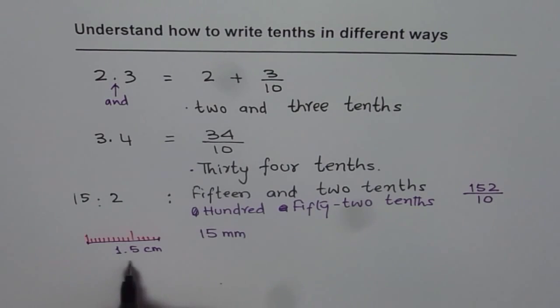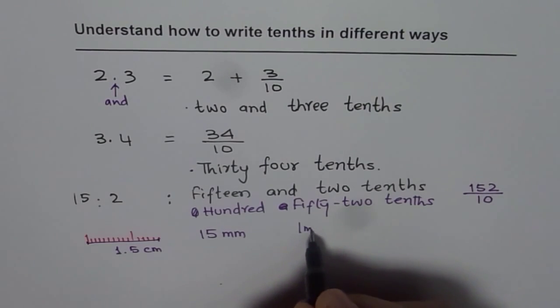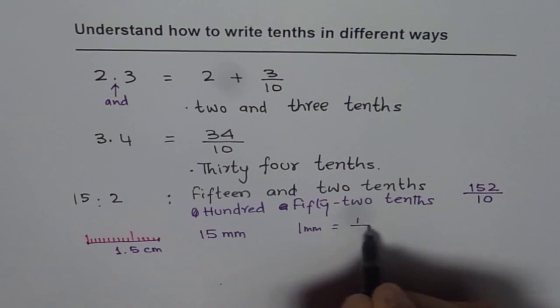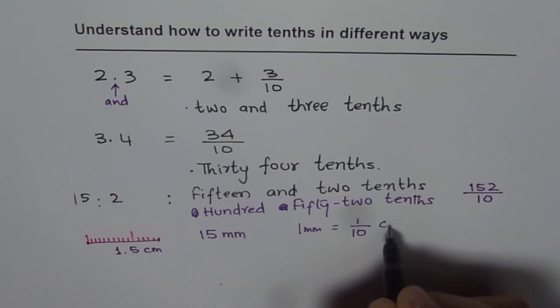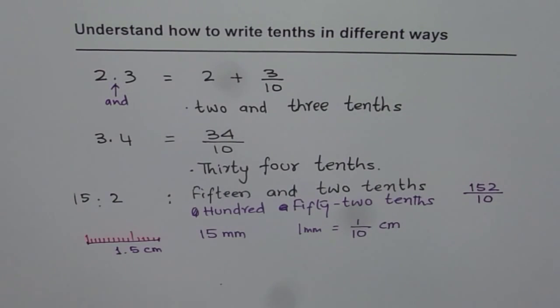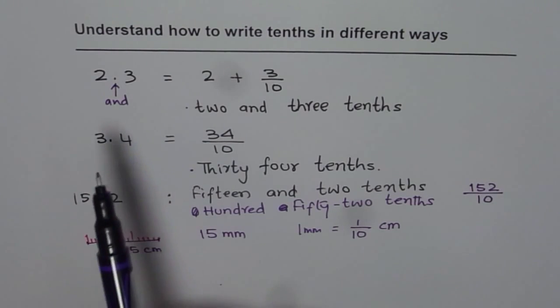You should know: 1 millimeter equals 1 tenth of a centimeter. So that is an application. This helps you understand the alternate way of writing decimal numbers.